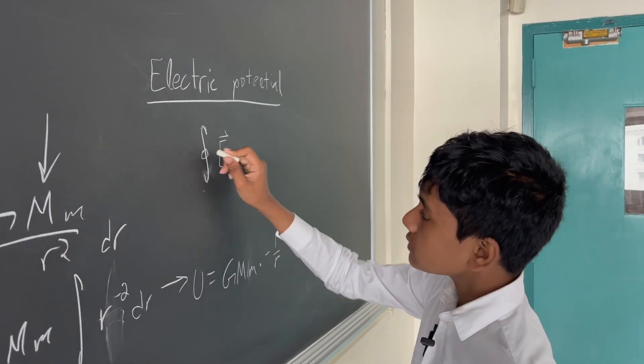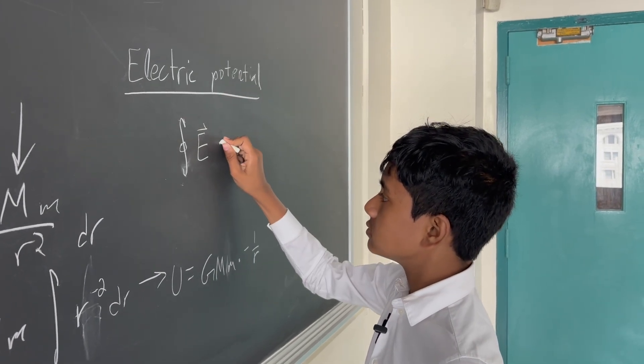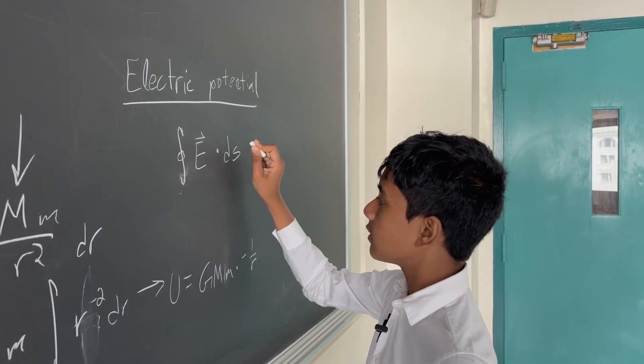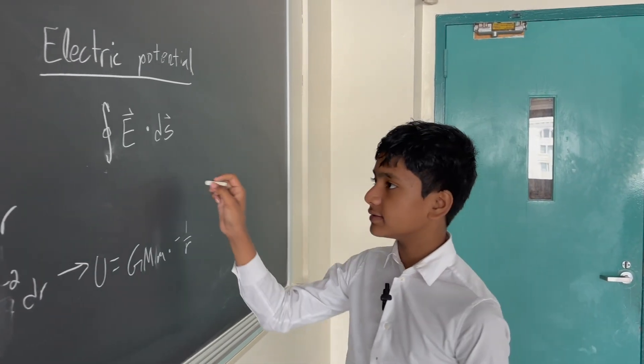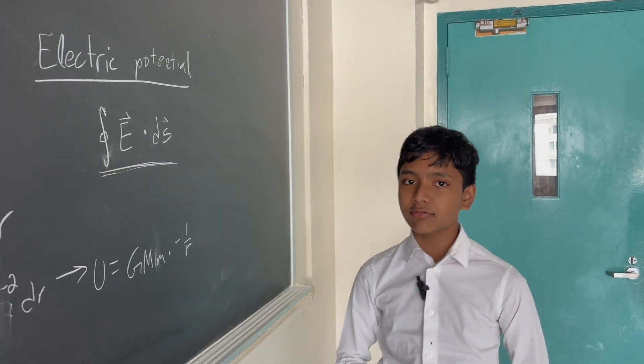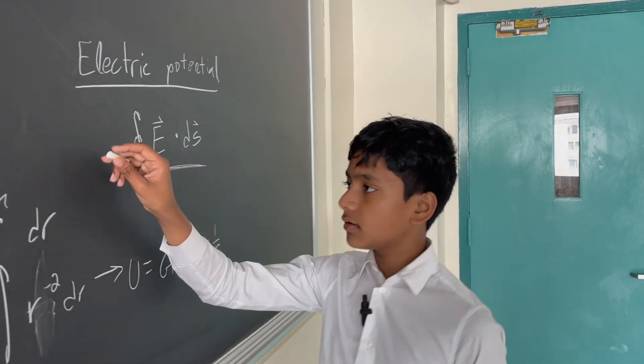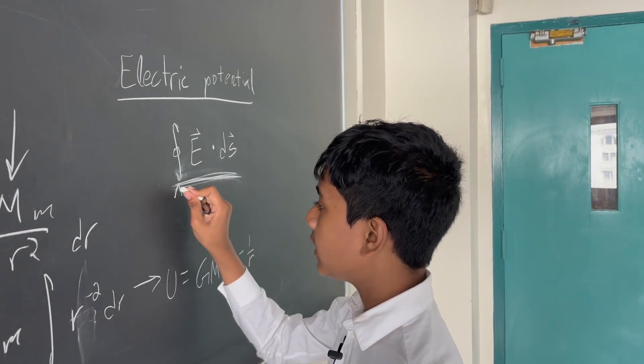So we've got this integral right over here. We've got the electric field times some small change. So this is essentially the general difference in potential from A to B.